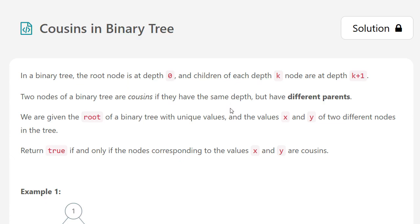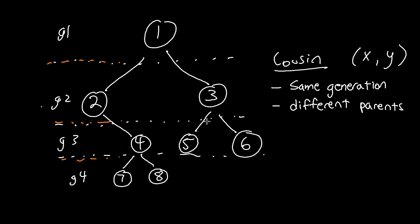Today's question is cousins in binary tree. They give us a binary tree, and you can think of it as a family tree. So there's generation 1, gen 2, gen 3, and gen 4. Cousins X and Y are cousins means they are in the same generation, but they have different parents.